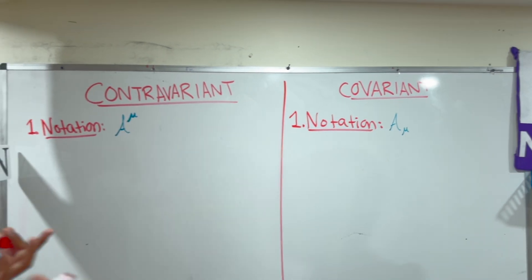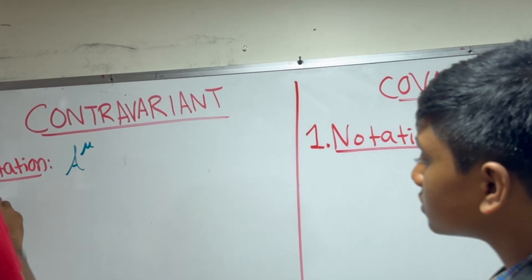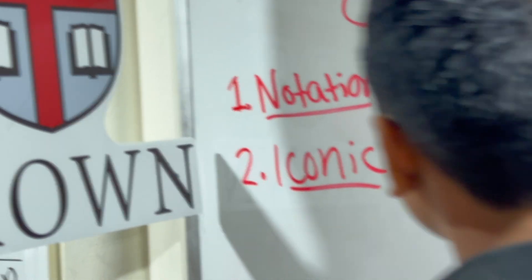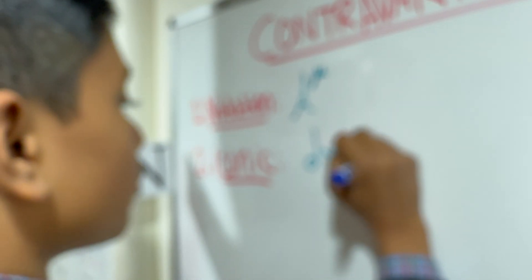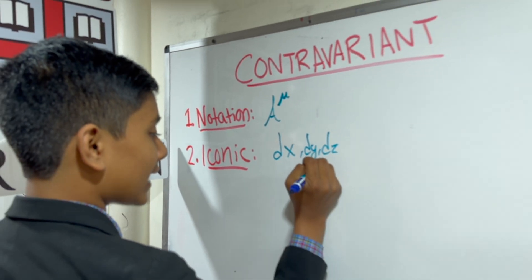Now, moving on from notation, let's talk about the icon. What is the iconic example of a contravariant vector? When we just have some small change in one direction, like dx, dy, or dt, or more generally, in any dimension, is dxm.